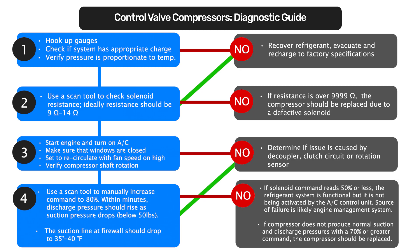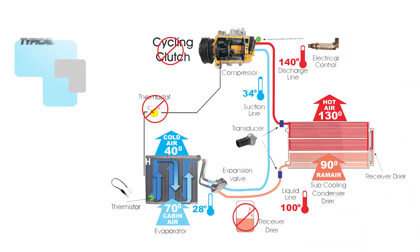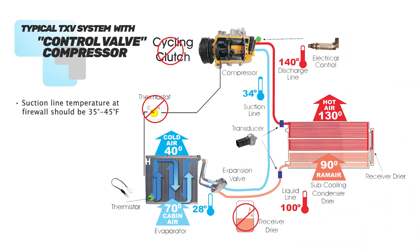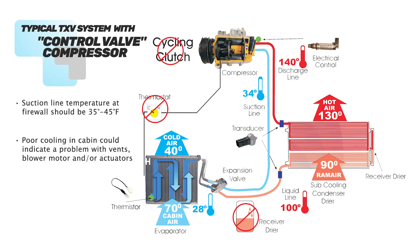If the compressor is unable to produce normal suction and discharge pressures with a 70 percent or greater command from the solenoid, the compressor should be replaced. You should also monitor the suction line temperature at the firewall — 35 to 45 degrees Fahrenheit indicates a normal refrigerant system.